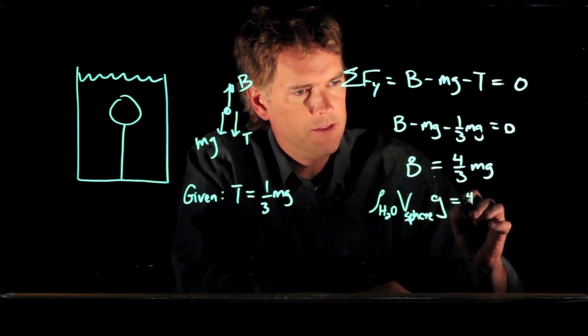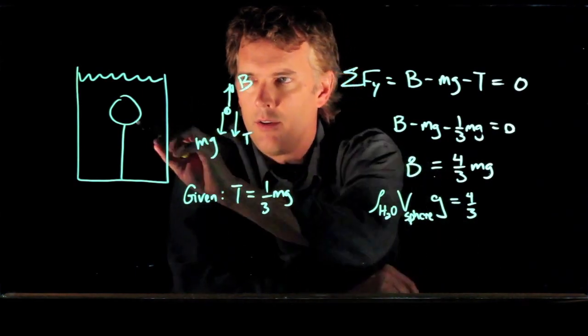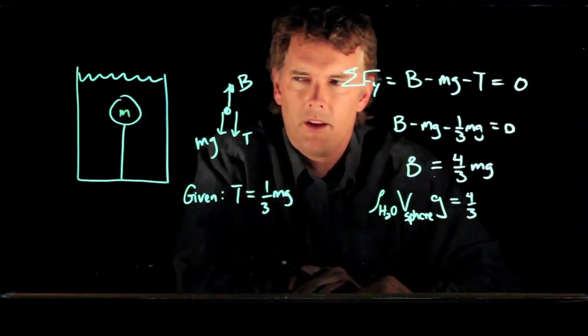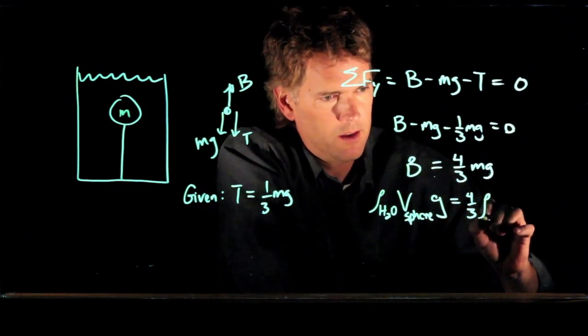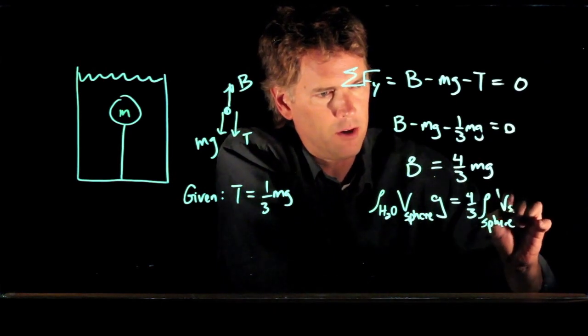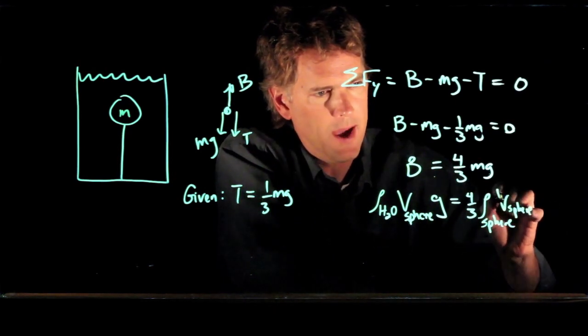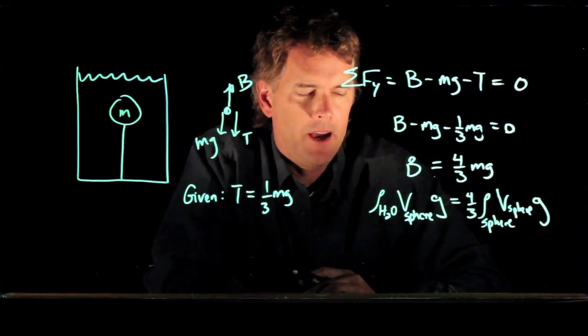Now, on the right side, we have m, the mass of the sphere. So if we know the density of that thing, we can multiply by the volume, and that gets us the mass of the sphere. And then again, we have g hanging out.